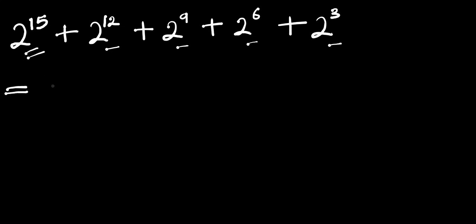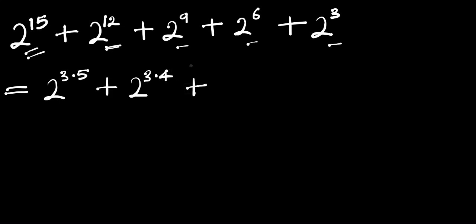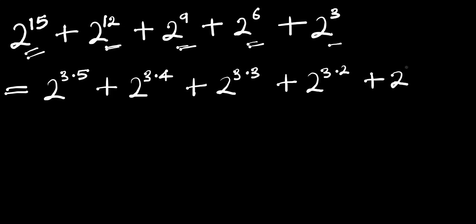For this, we are going to have 2 to the power of 3 times 5, plus 2 to the power of 3 times 4, plus 2 to the power of 3 times 3, plus 2 to the power of 3 times 2, plus 2 to the power of 3 times 1.